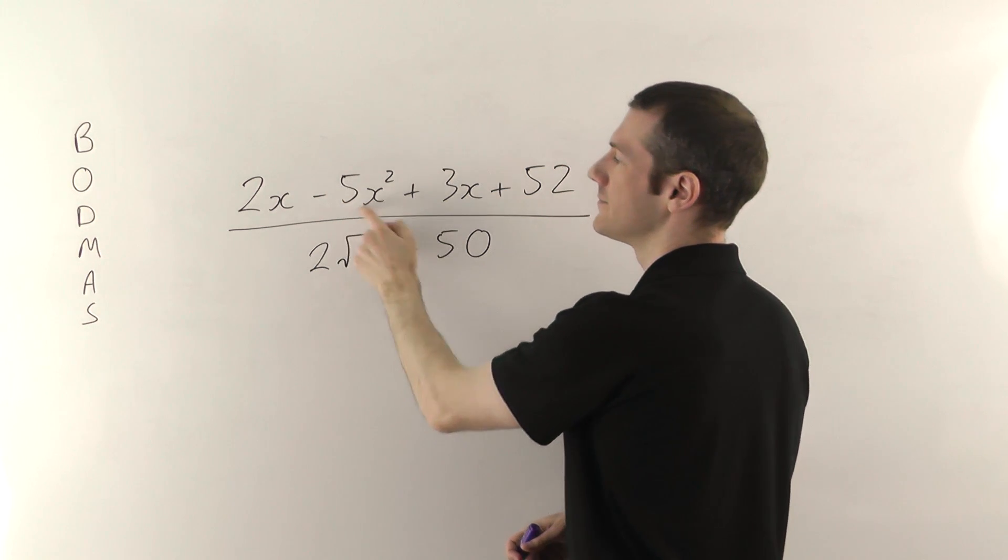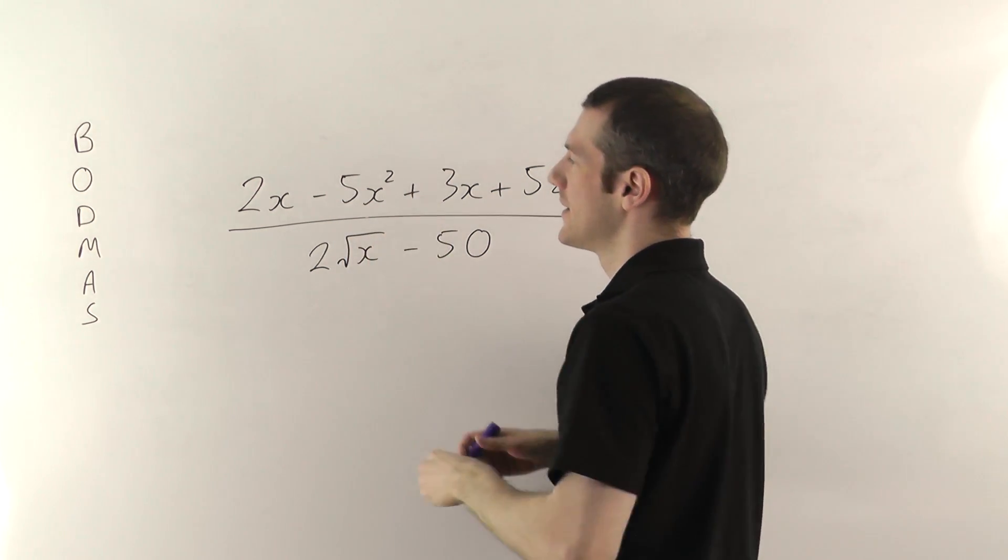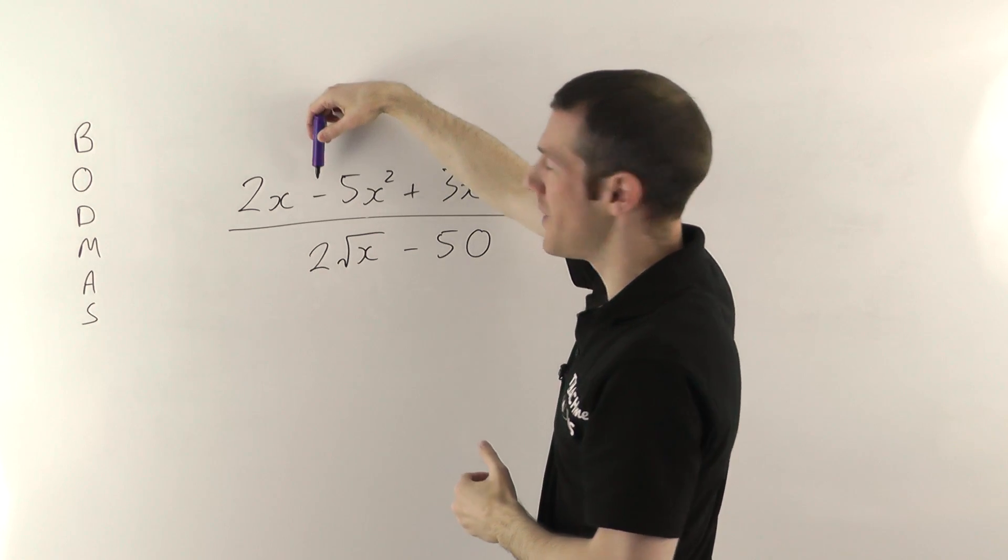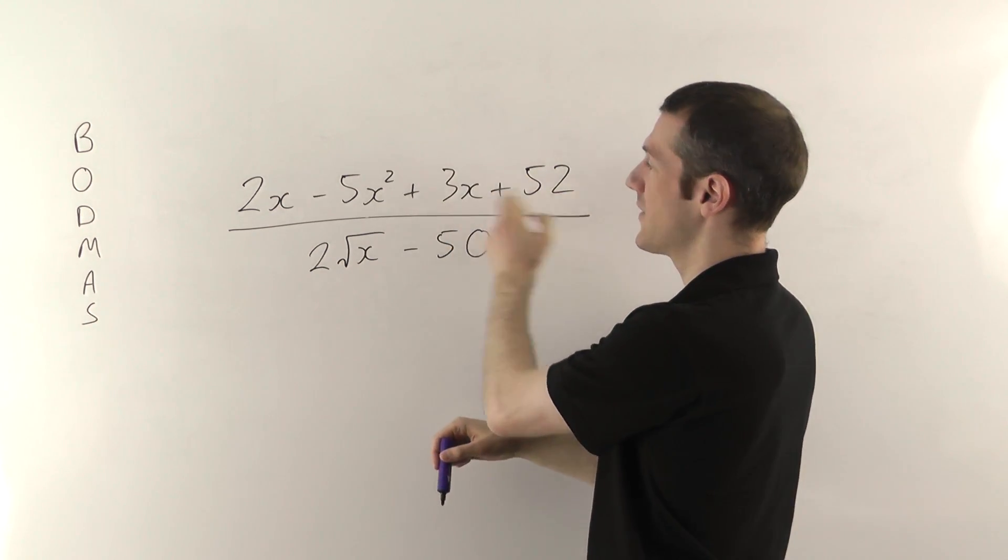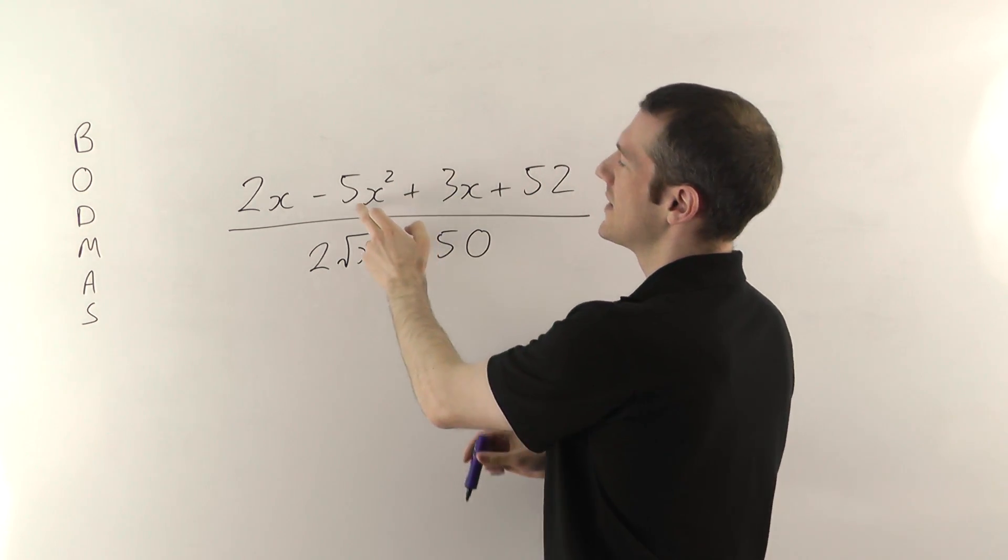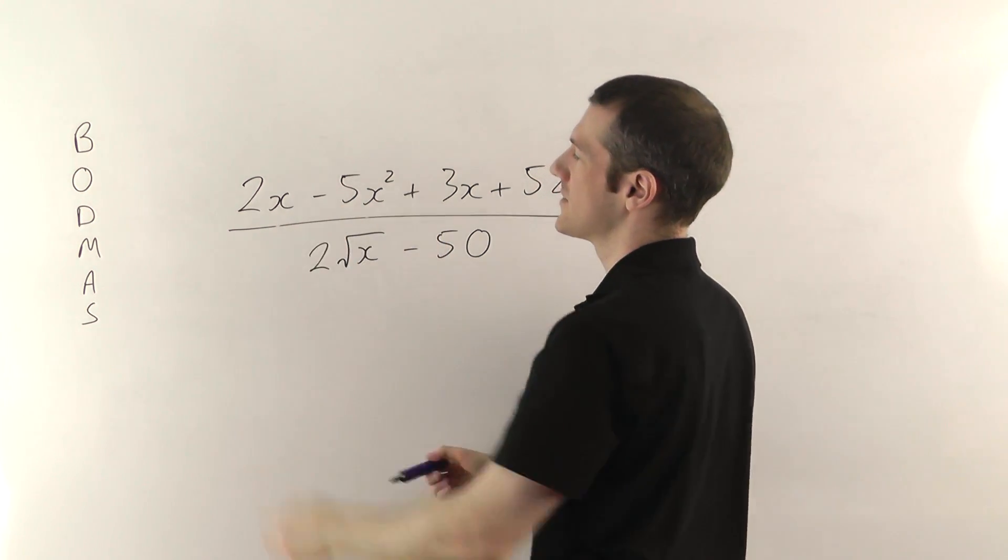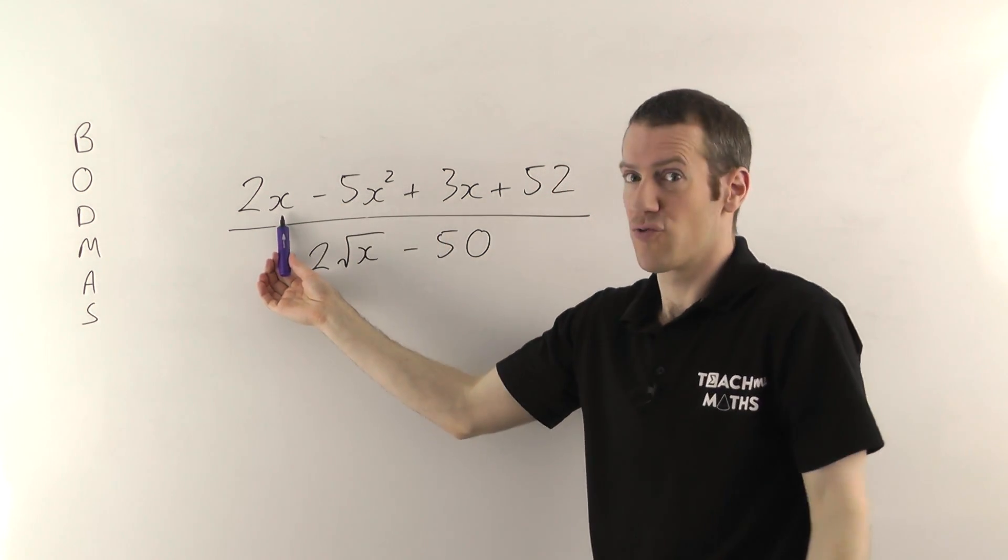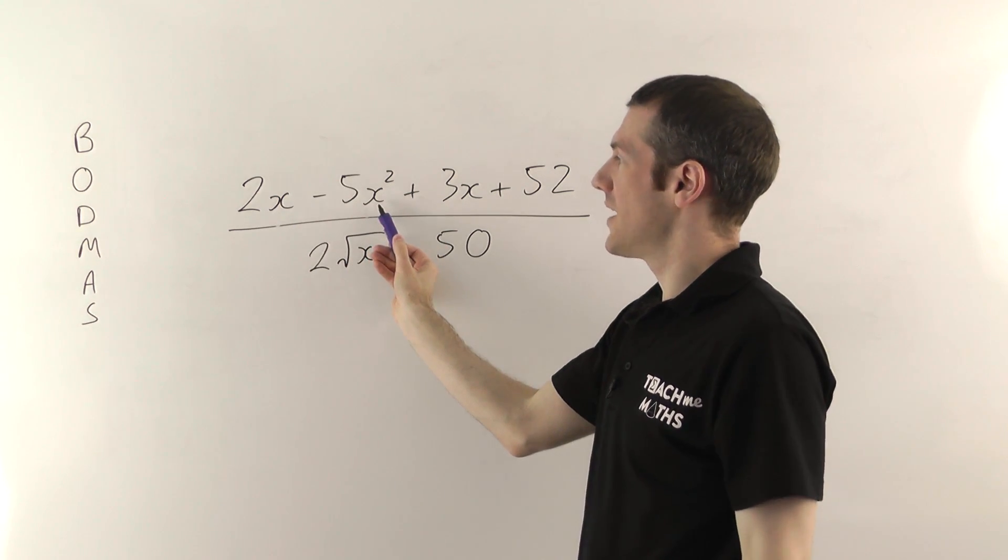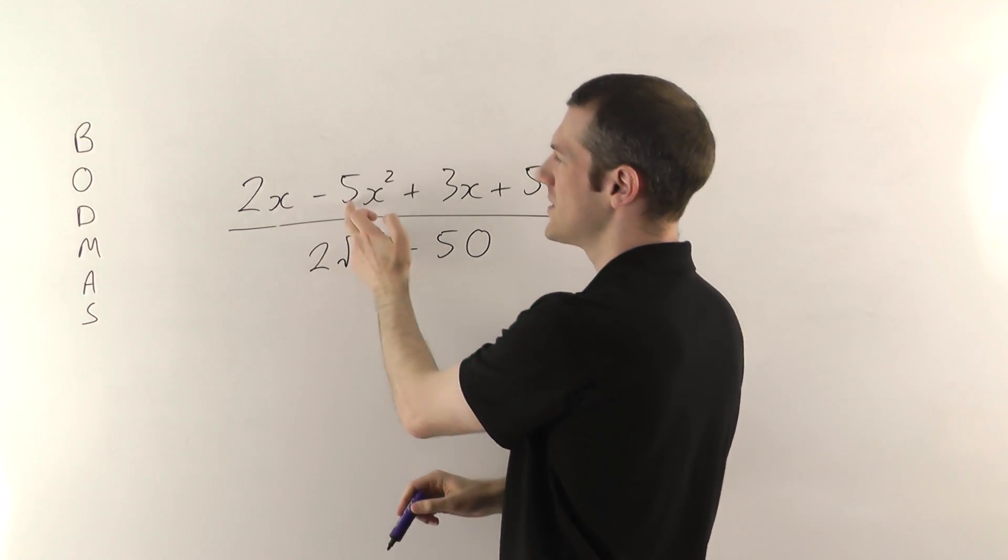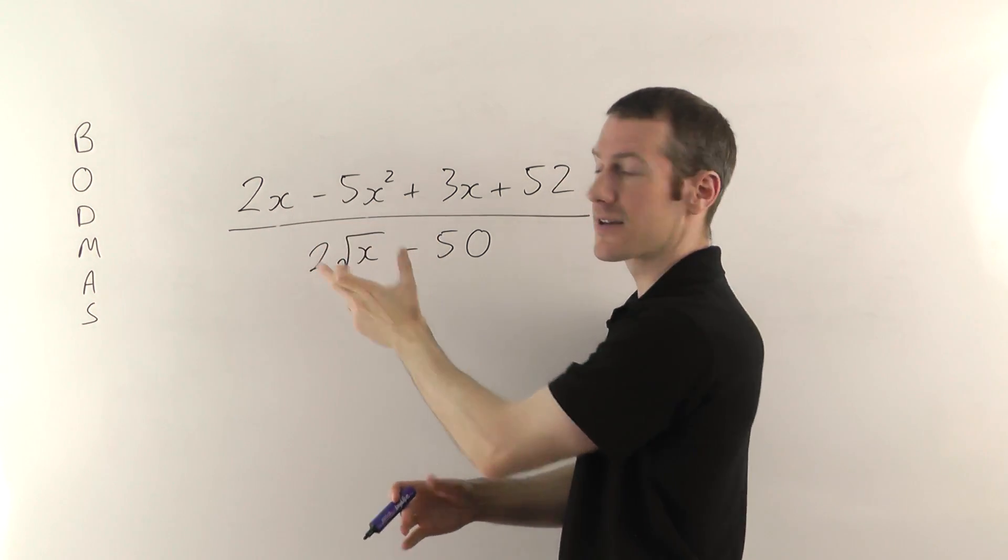This term here though, the minus 5x squared, this is a different term here. It's separated from this by the minus sign, and from the other things by the plus sign here. So this is 5 lots of whatever x squared is, and this is going to be different from this. Yeah, so if x turned out to be 3, x squared would turn out to be 3 squared, which is 9. So this is 2 lots of 3, whereas this is 5 lots of 9. So they're different things.